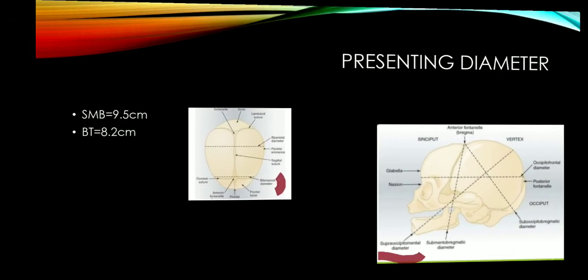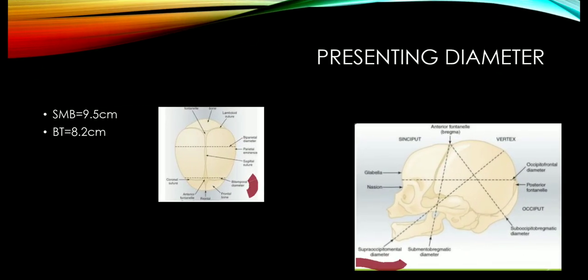The presenting diameters — there are two presenting diameters, as marked in the figure. One is the bitemporal diameter, which crosses the temporal line. The other diameter is the submental-bregmatic, which is 9.5 cm. The bitemporal is 8.2 cm.